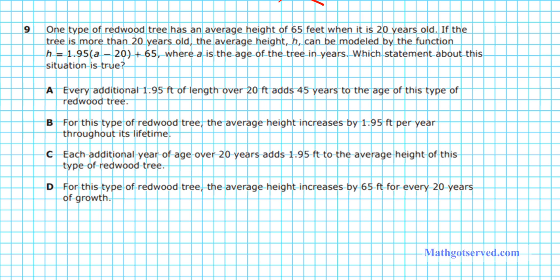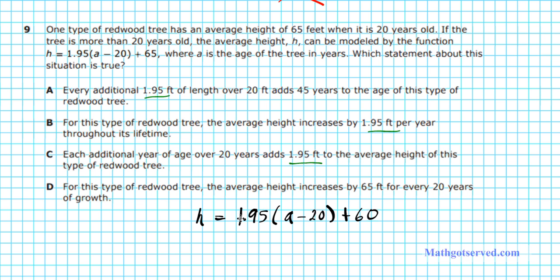This is a type of problem where looking at the options can help you zero in on the relevant component. The equation is h equals 1.95 times (a minus 20) plus 65. If you remember the point-slope equation of a line, this looks like slope-intercept form: 1.95 looks like the slope M, and the other parts look like x1 and y1. It's important for us to understand what 1.95 means in the context of this problem.